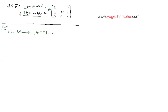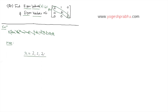Now, in this matrix, this is a special case. If you look at this, these are the diagonal values, and all the elements below this diagonal are all 0. This type of matrix is called an upper triangular matrix — an upper triangular matrix will have all the elements below the diagonal equal to 0. For an upper triangular matrix, you don't need the characteristic equation, because the eigenvalues are going to be the diagonal values only.